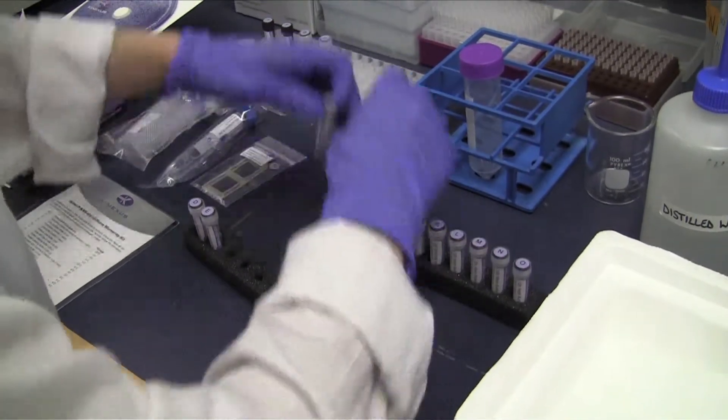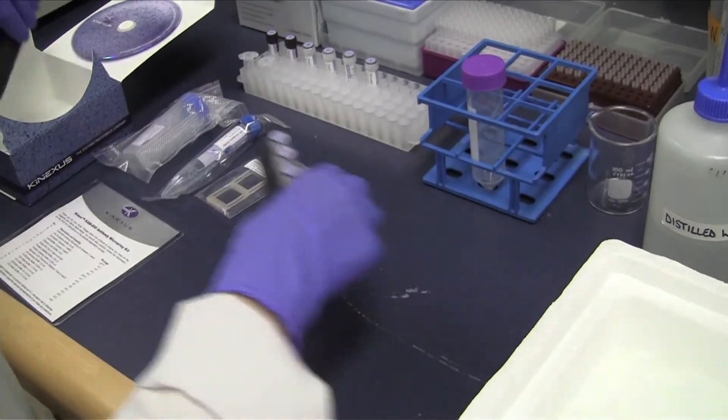For the dye labeling of your lysates you will need vials F, G, H, and I.